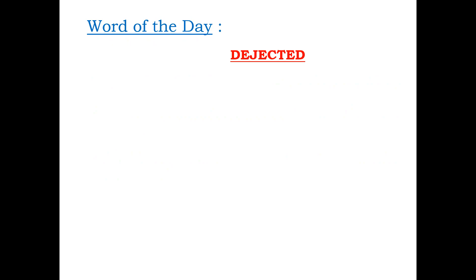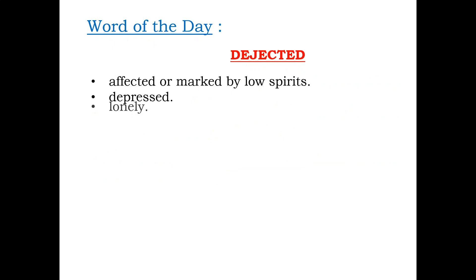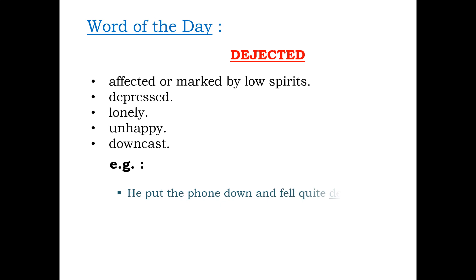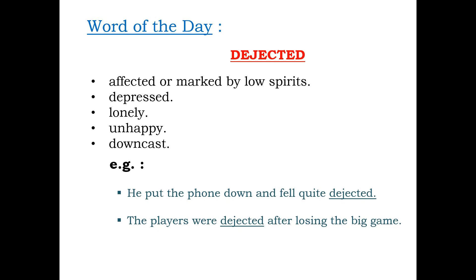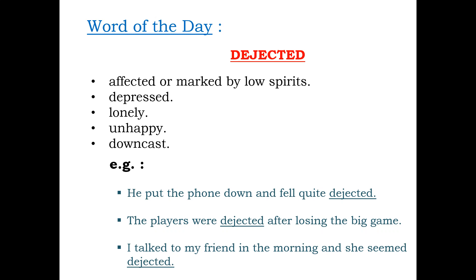Today's word is dejected. Dejected means affected or marked by low spirits, depressed or lonely, unhappy or downcast. Examples: He put the phone down and felt quite dejected — meaning he was very depressed. The players were dejected after losing the big game — they were marked by low spirits. I talked to my friend in the morning and she seemed dejected — meaning she seemed very unhappy.